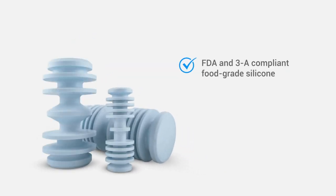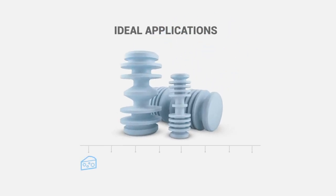These pigs are made from FDA and 3A compliant food grade silicone. Ideal applications include cheese, chocolate, yogurt, dressings, shampoo, lotions, toothpaste, detergents, and much more.